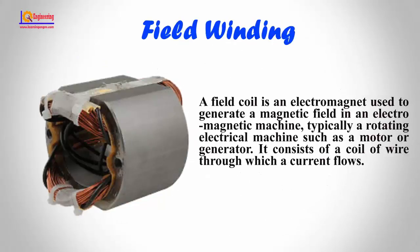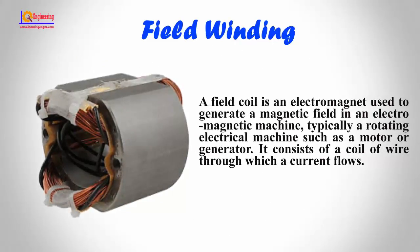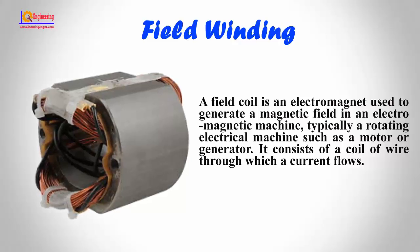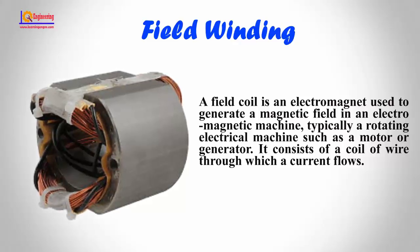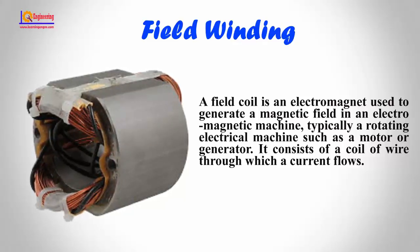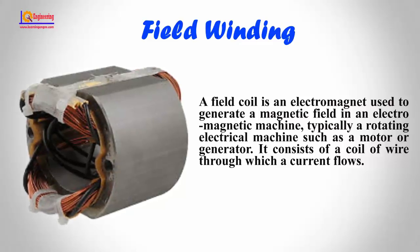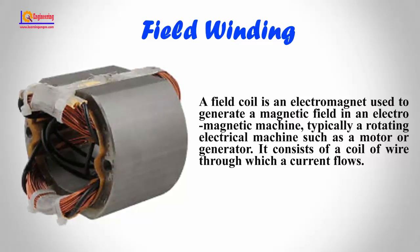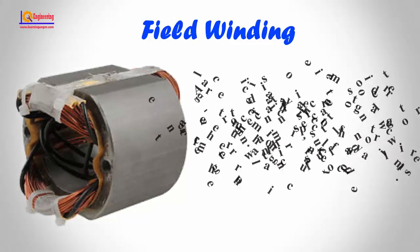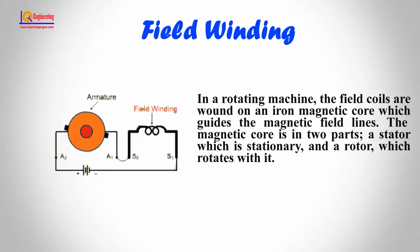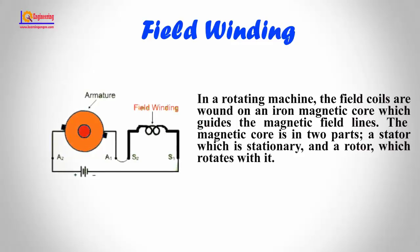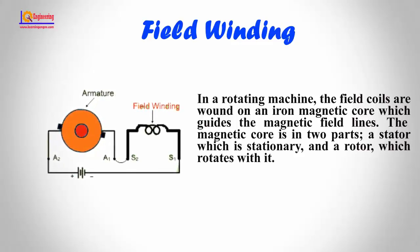A field coil is an electromagnet used to generate a magnetic field in an electromagnetic machine, typically a rotating electrical machine such as a motor or generator. It consists of a coil of wire through which a current flows. In a rotating machine, the field coils are wound on an iron magnetic core which guides the magnetic field lines.